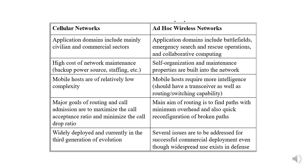In cellular networks, the major goals of routing and call admission are to maximize the call acceptance ratio and minimize the call drop ratio. In ad hoc networks, the main aim is to find paths with minimum overhead and enable quick reconfiguration of broken paths. Cellular networks are widely deployed and currently in the third generation of evolution.